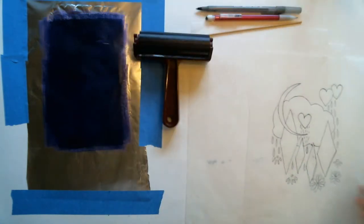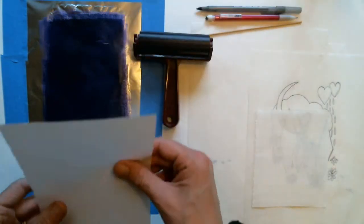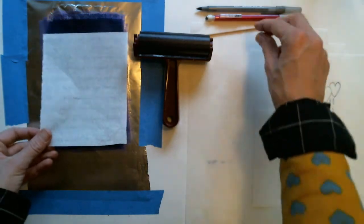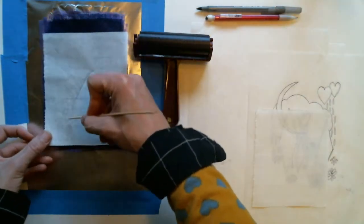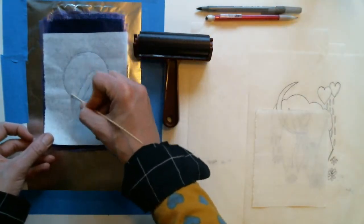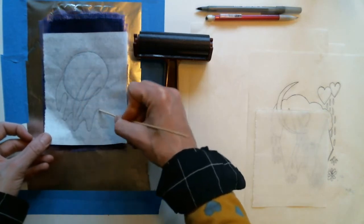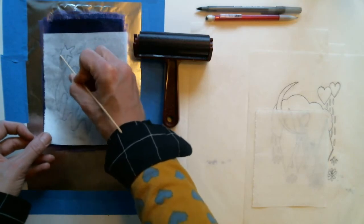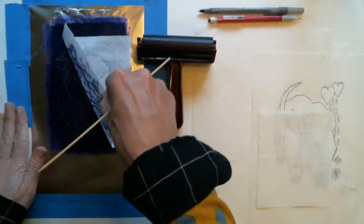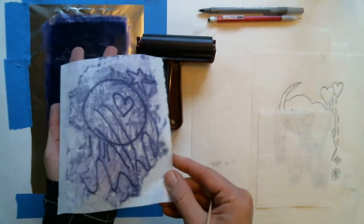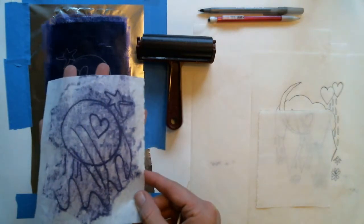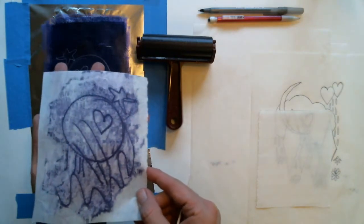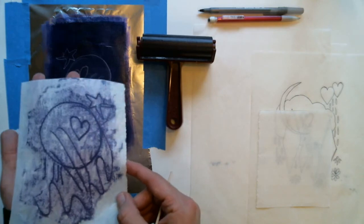If I were just to lay down my paper on top of my inking slab and draw into it without a matrix, this is a monotype. A monotype is a one-of-a-kind image.